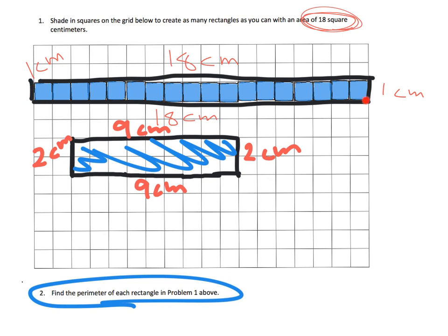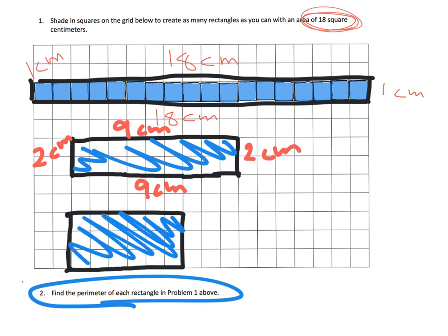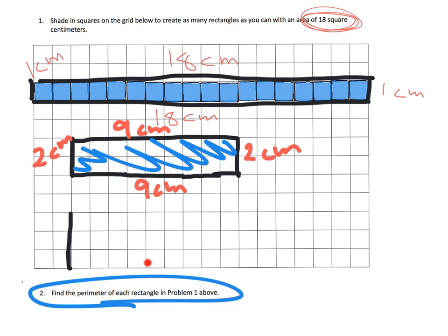Let's keep going in an organized fashion. We had 1 unit tall, then 2 units tall — now let's try 3 units tall. If it's 3 units tall, how wide does it need to be to still use all 18 squares? Three times what is 18? Three times 6 is 18, so there it is: 3 centimeters tall and 6 centimeters wide. I'll leave it to you to find the perimeter of that rectangle.